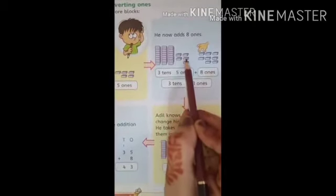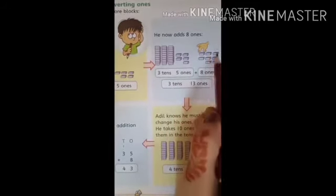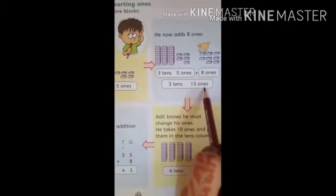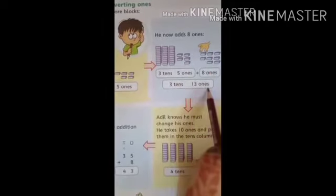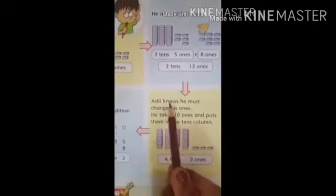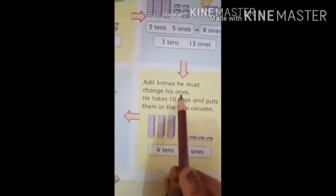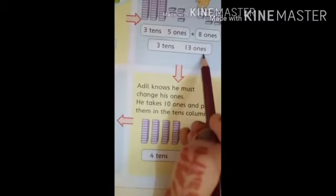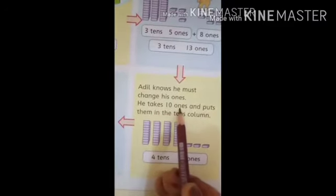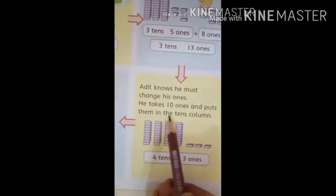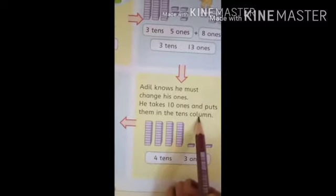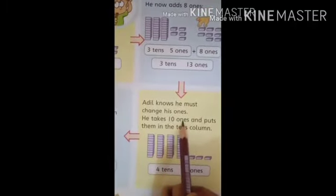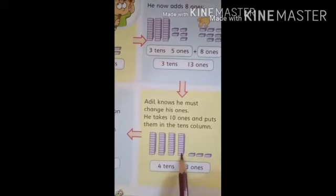Count: one, two, three, four, five, six, seven, eight, nine, ten, eleven, twelve, thirteen. Ab hamare paas kya number bana? Thirteen ones. Three tens and thirteen ones. Adil knows he must change his ones. Adil janta hai ki usne last mein ones ko change karna hai. He takes ten ones - wo leta hai ten ones - and puts them in the tens column. Jo ones ke blocks hain, is mein se ten blocks wo leta hai, aur usko tens ke column mein put kerta hai.